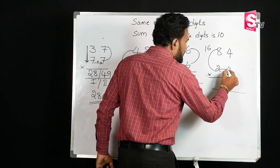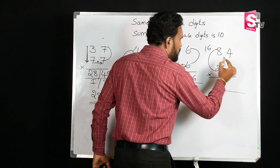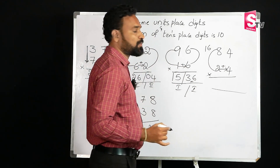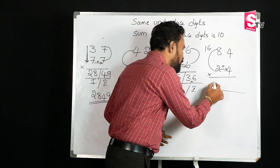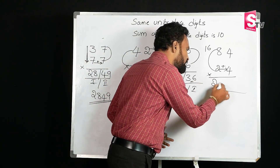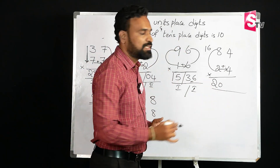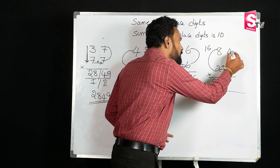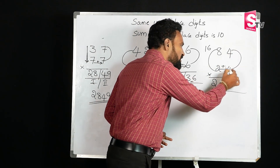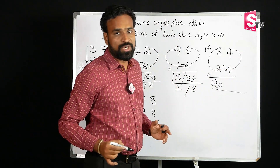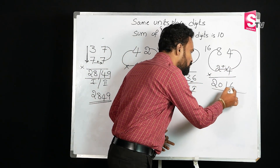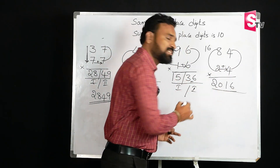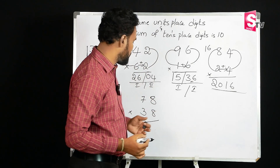This is 16. Let's adjust this — 16 plus 4 gives us 20. After that, the second part of the multiplication changes: what is 4 times 4? 4 times 4 is 16. So 2016 is the final answer.